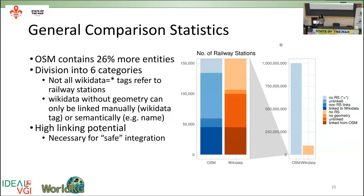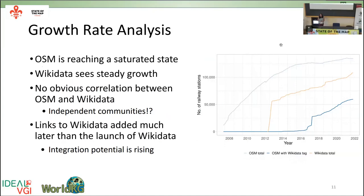The second analysis was growth rate: how railway stations have grown on both sources over time. OSM has now reached a steady state — most railway stations are already added — and since mid-2020 not many new ones have been added. Wikidata is still growing. We did not see an obvious correlation between the two sources and believe the people editing railway stations are largely independent, meaning creation of an entity in one source is not followed by creation in the other. Links to Wikidata were also added much later — Wikidata started in 2012, but links appear from 2016.